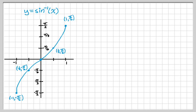Okay, so what we have here is a graph of arcsine, and you can see the domain is negative 1 to 1, and the range is negative pi over 2 to pi over 2.